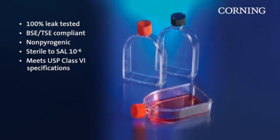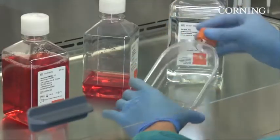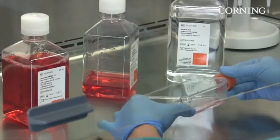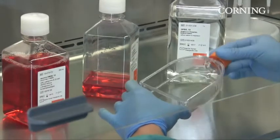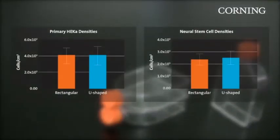They meet USP Class 6 specifications. In a recent study, the U-shaped flask was shown to consistently perform the same as rectangular predecessors. The data demonstrates that across several studies using various cell types, the cells exhibit comparable growth.